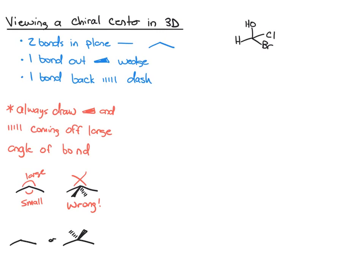What's correct is to take them and draw them from the large angle of the bond. It doesn't really matter which side you put which on though. Be careful about that because these structures imply the tetrahedral nature, while the small-angle version implies some weird pyramid-like structure.